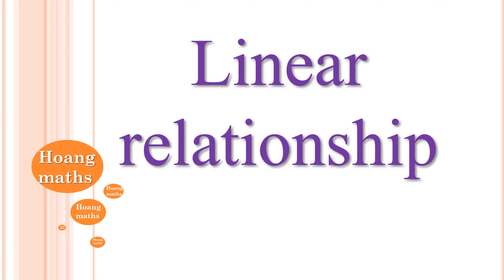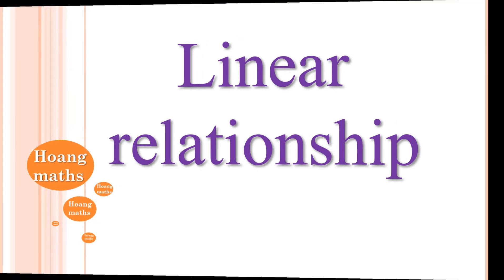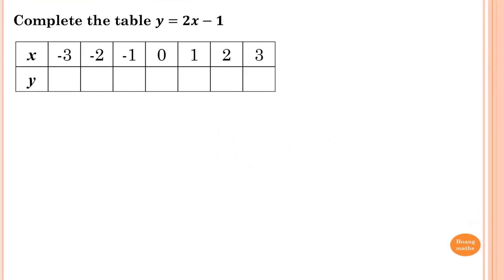Now let's complete this table for the linear relationship y = 2x - 1. When x is minus 3, we substitute the value into the equation.